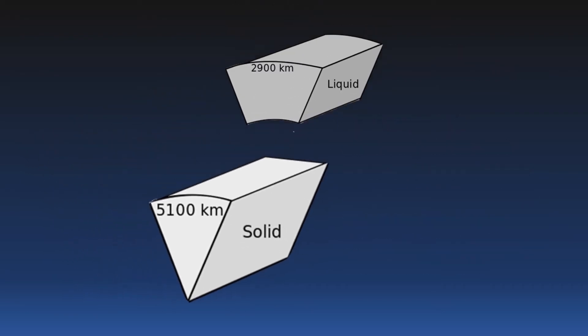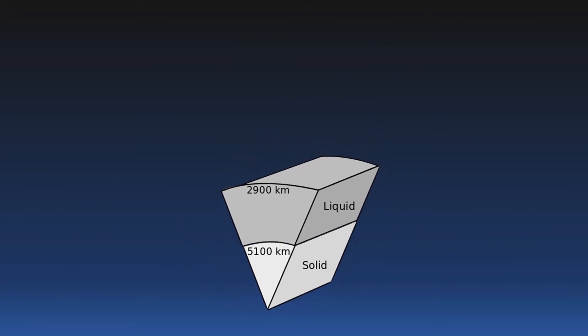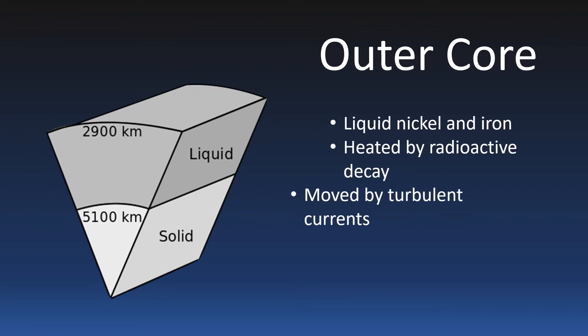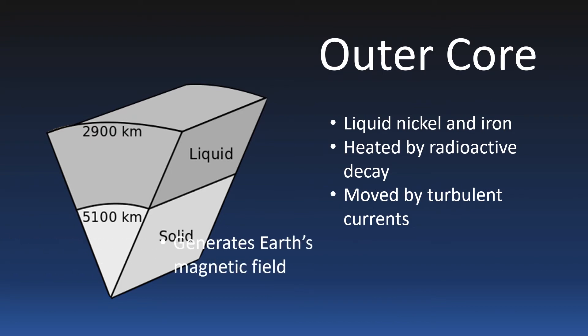Now let's look at the outer core. This is also part of the core and is made up of iron and nickel, just in liquid form. The outer core is in liquid form and it sits 5,180 to 2,880 kilometers beneath the Earth's surface.